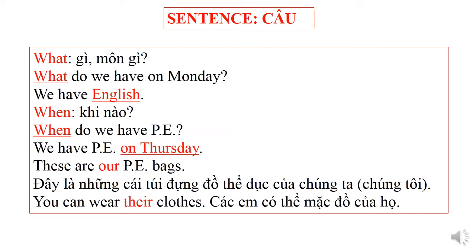What do we have on Monday? Chúng ta có môn học gì vào ngày thứ 2? We have English. Để trả lời cho chữ 'What' — đây là câu hỏi WH question — thì chúng ta phải trả lời ra môn học. Ví dụ ta hỏi môn gì, thì mấy bạn phải trả lời cho người ta được cái môn. Còn câu Yes/No question thì mình chỉ trả lời là Yes hoặc No thôi.